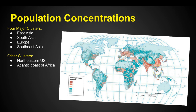Other clusters where you find lots of people, populations concentrated, would be on the northeastern seaboard of the United States and Canada, and the Atlantic coast of Africa. You're going to want to remember where these major clusters of populations are.